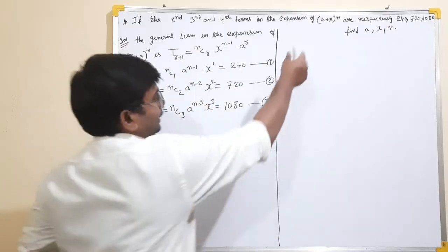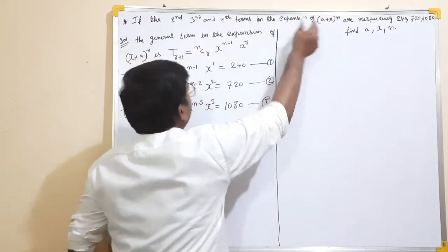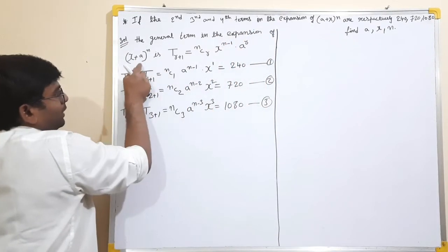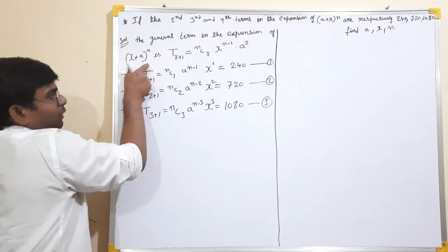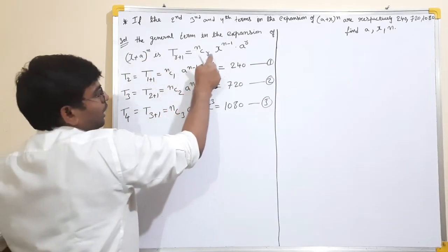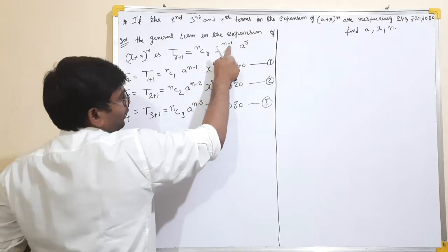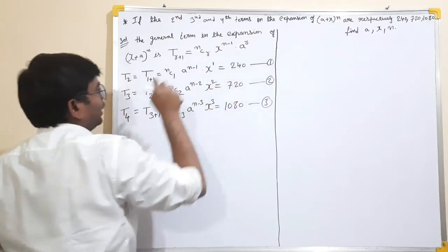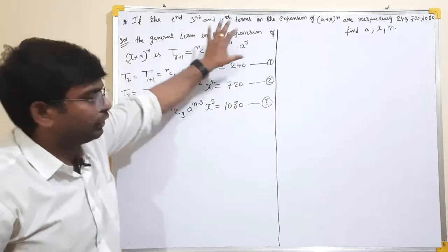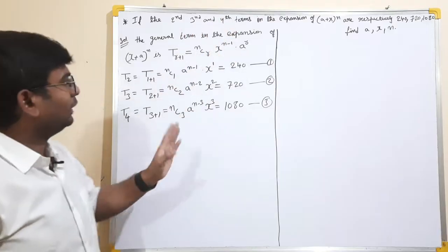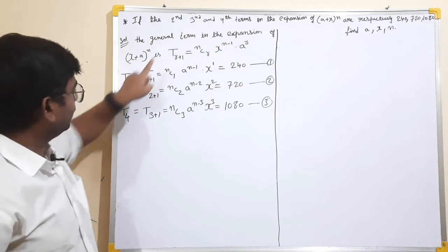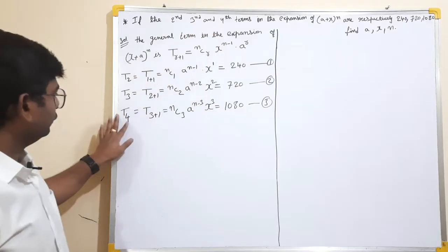So in the expansion, the general term of (A + X) to the power of N is: T(R+1) = NCR times X to the power of (N minus R) into A to the power of R. That is the formula. Now we apply this for the second, third, and fourth terms.